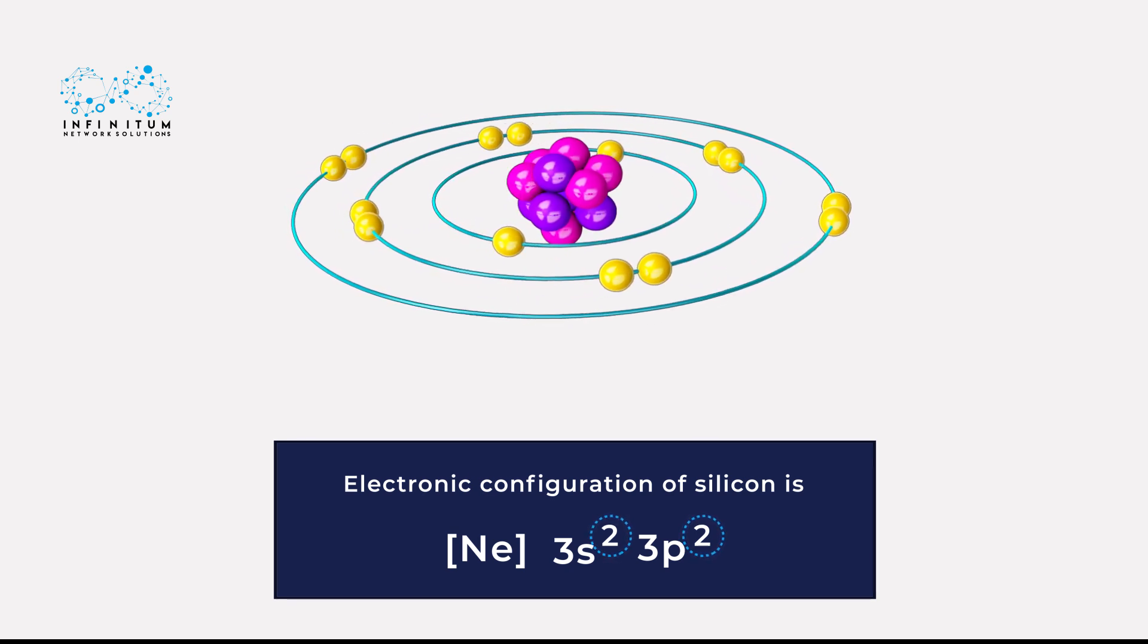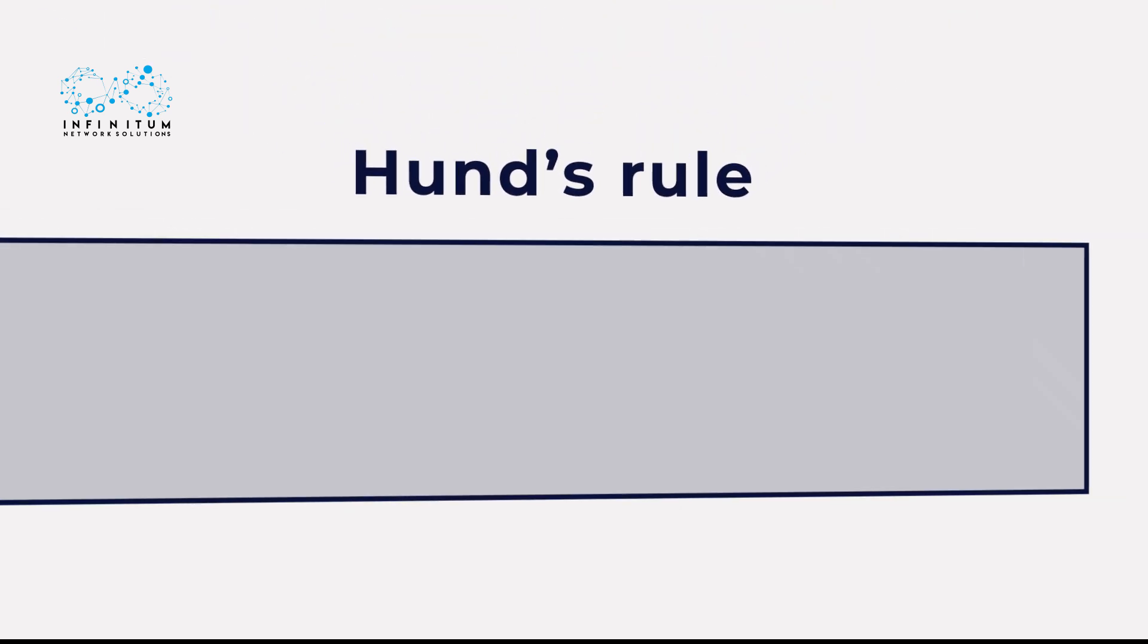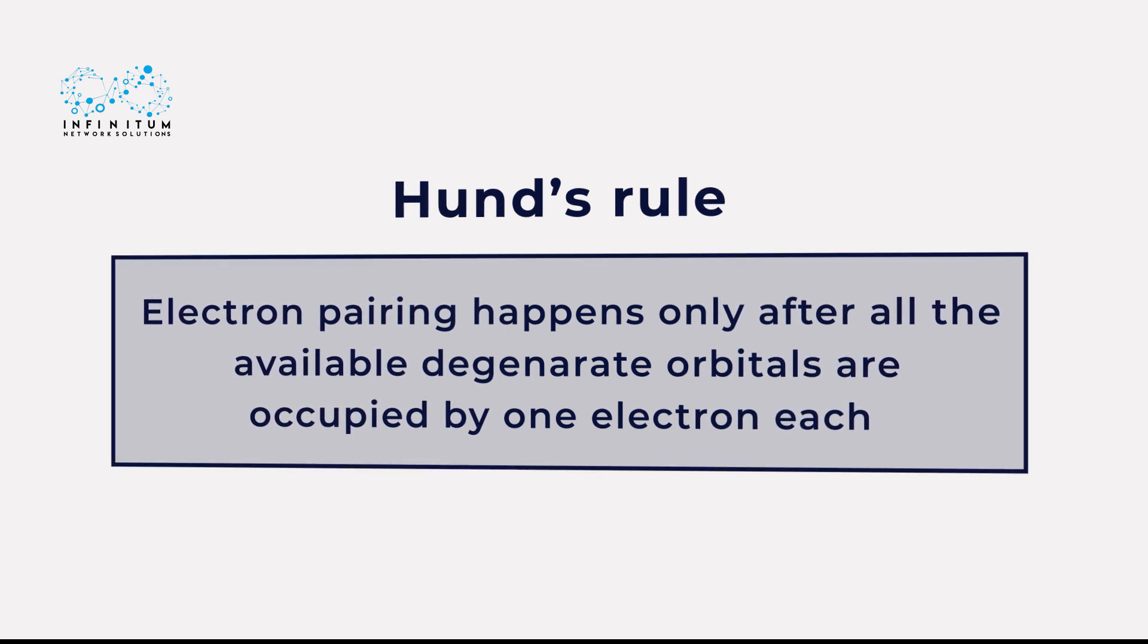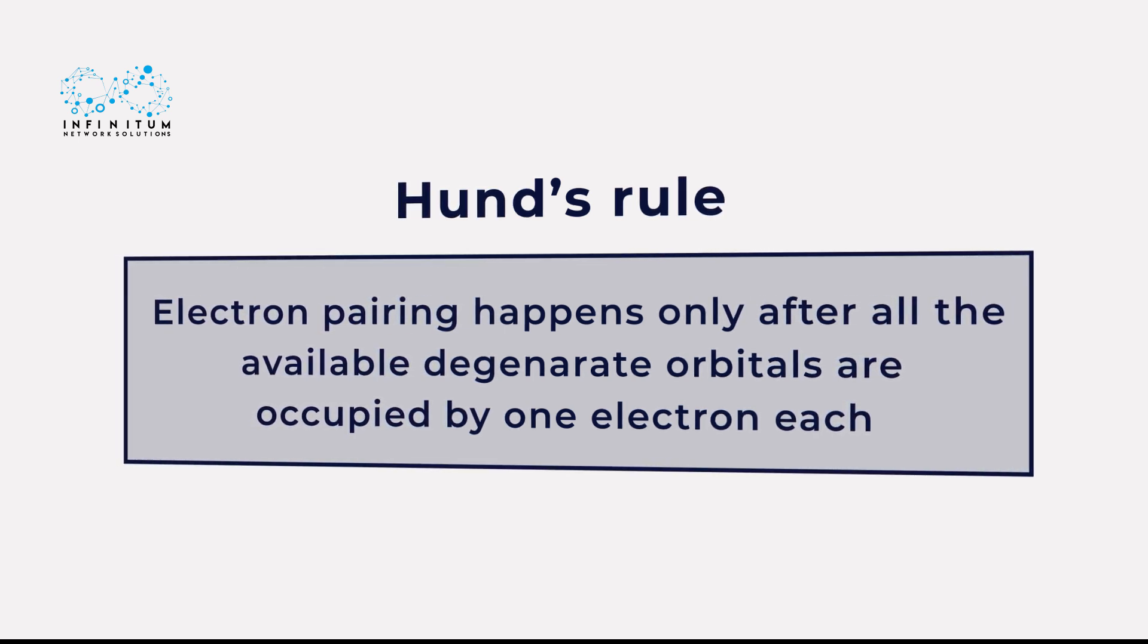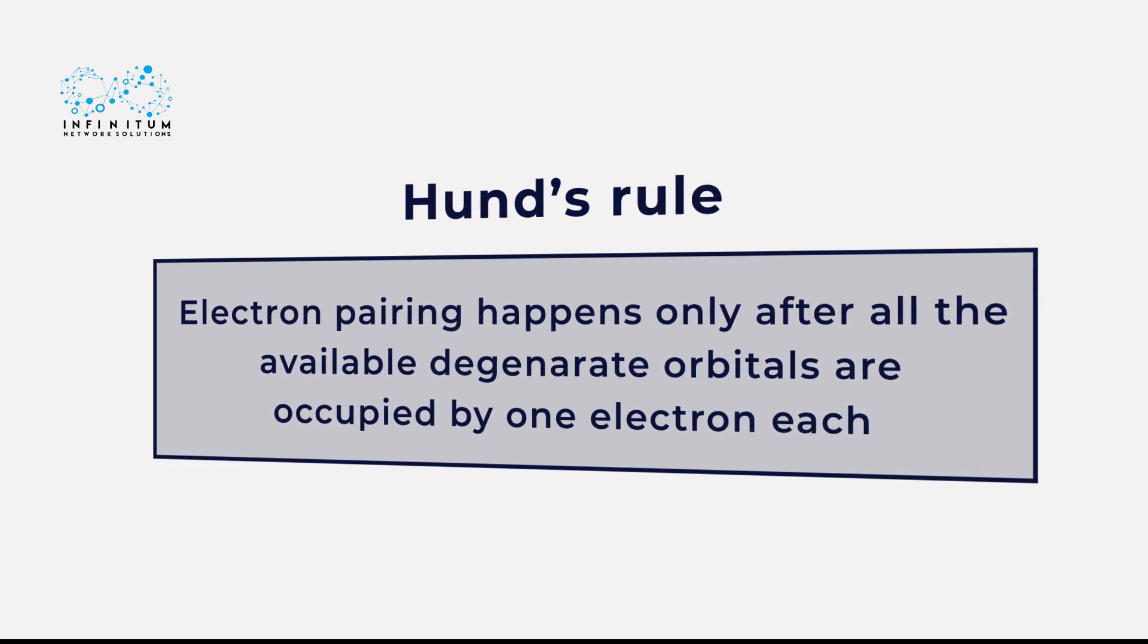The second important rule to determine the electronic configuration of an atom is Hund's rule. It says the electron pairing happens only after all the available degenerate orbitals are occupied by one electron each. Let's use an example to understand Hund's rule.